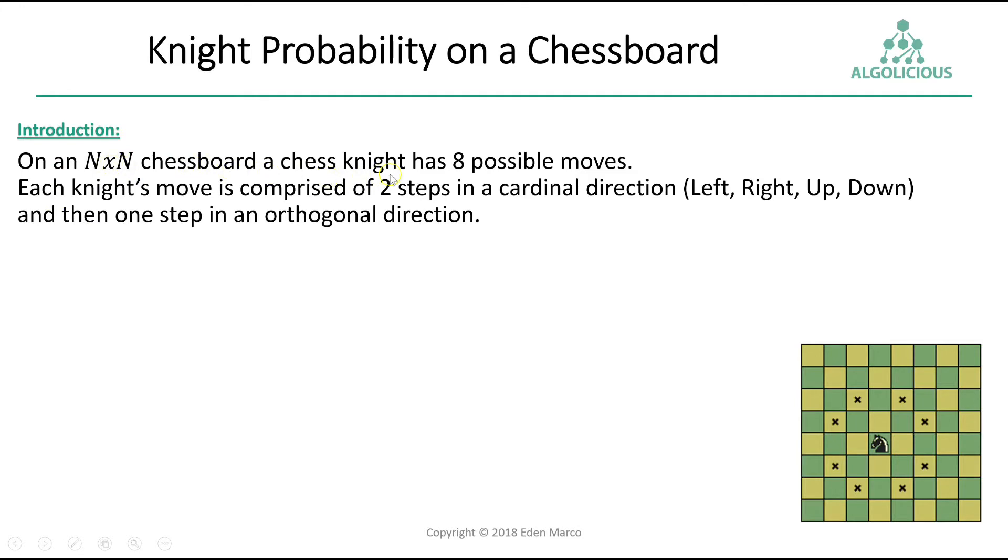On an N by N chessboard, a chess knight has eight possible moves. Each knight's move is comprised of two steps in a cardinal direction - left, right, up, down - and then one step in an orthogonal direction.